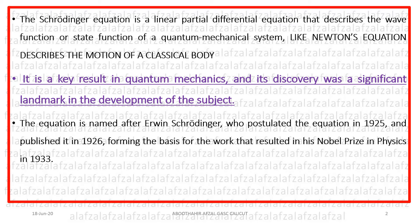First of all, Schrödinger's Equation is nothing but a linear partial differential equation that describes the wave function or state function of a quantum mechanical system. Like Newton's Equation describes the motion of a classical body, in classical mechanics Newton's Equation is used to understand the future dynamics of a moving classical body.